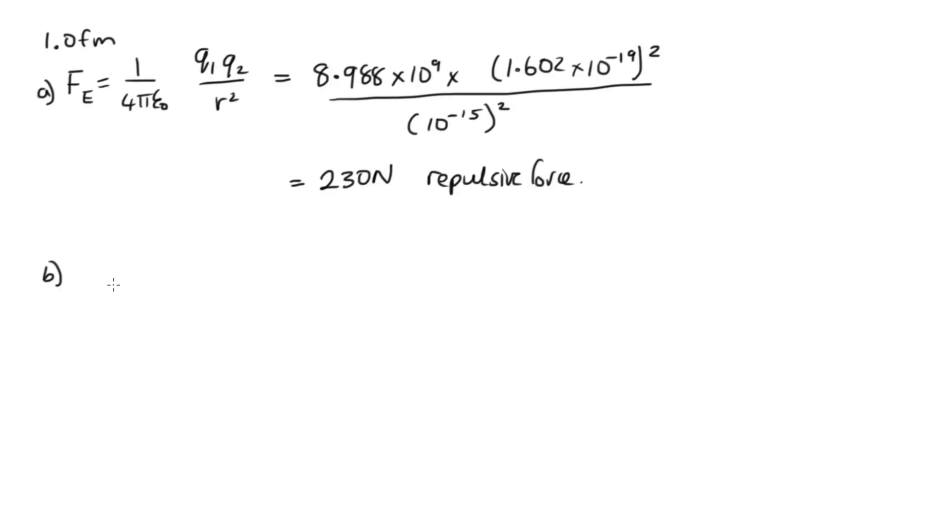In part B, we need to calculate the size of the gravitational force. So the gravitational force is given by G m1 m2 on r squared.